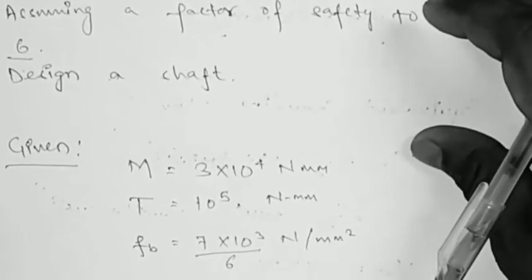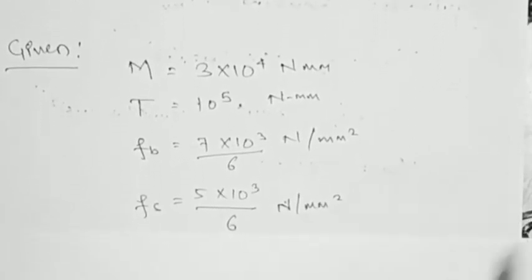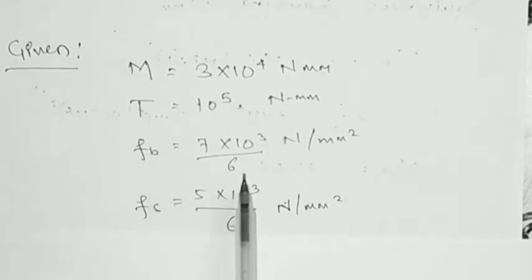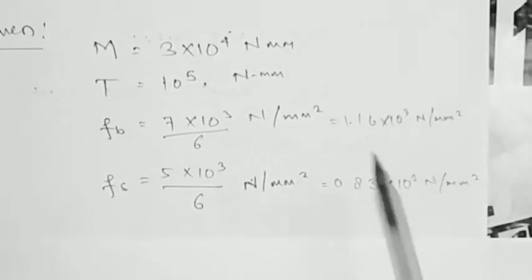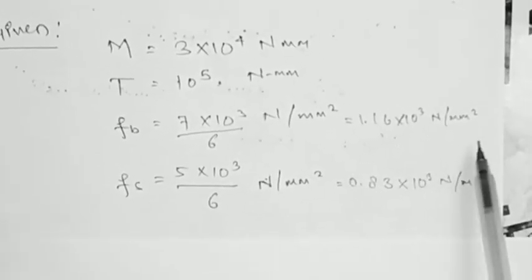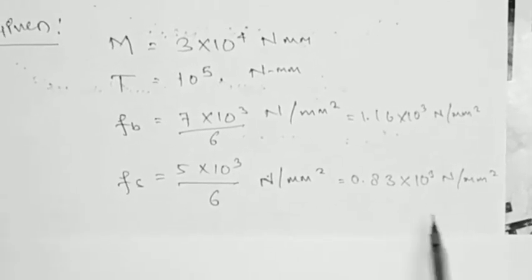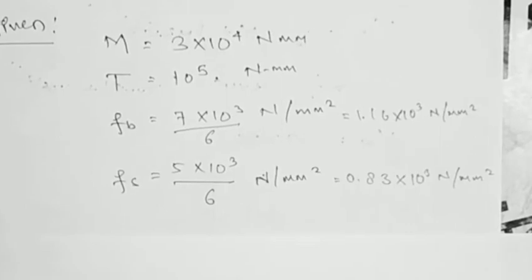The given data are: M = 3 × 10⁴ N·mm and T = 10⁵ N·mm. We divide the given stresses by the factor of safety of 6. So the allowable bending stress FB = 7 × 10³ / 6 = 1.16 × 10³ N/mm², and the allowable shear stress FS = 5 × 10³ / 6 = 0.83 × 10³ N/mm².